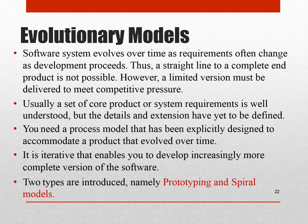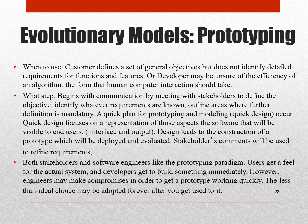There are two types: prototyping and spiral models. In terms of prototyping, when to use this kind of model — a customer defines a set of general objectives but does not identify detailed requirements for functions and features. A developer may be unsure of the efficiency of an algorithm, the form that human-computer interaction should take, and it begins with communication by meeting with stakeholders to define the objective and identify whatever requirements are known.